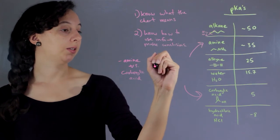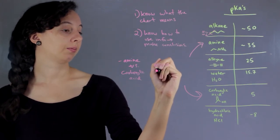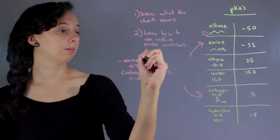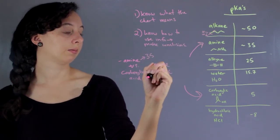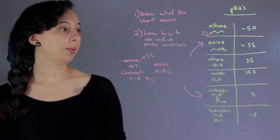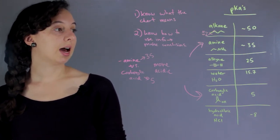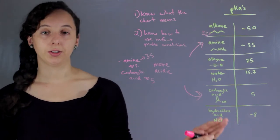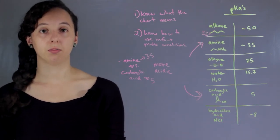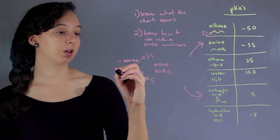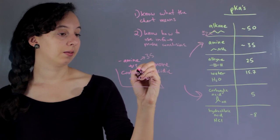35, 5. The way that pKa's work is that the lower the number, the more willing the proton is to come off. In other words, the more acidic. So in this case, 5 is a lower number, so we know that a carboxylic acid is more acidic.